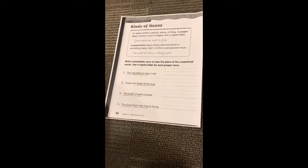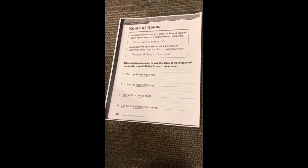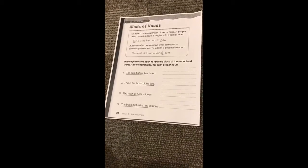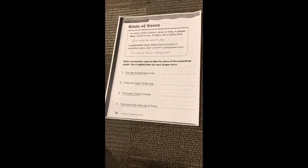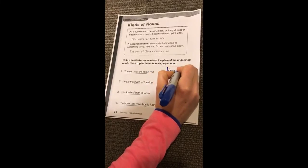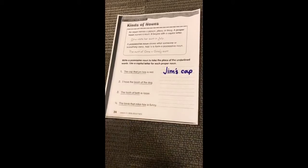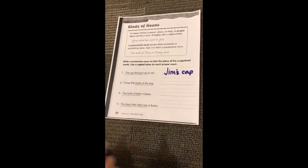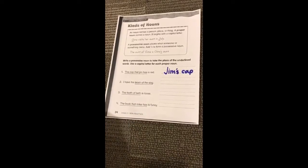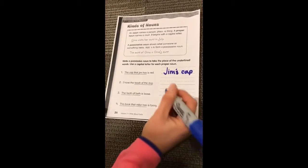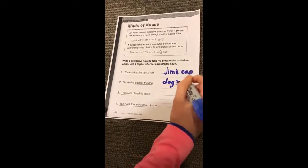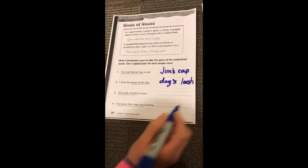Down here it says: write a possessive noun to take the place of the underlined words. Use a capital letter for each proper noun. Number one: the cap that Jim has is red. So we're talking about a person named Jim. I'm going to start with a capital letter when I write Jim. We're talking about something that he owns — he has a cap. So we'll say Jim's cap is red. Jim's cap is red means the same thing as the cap that Jim has is red. And here we have: I have the leash of a dog. We could also say I have the dog's leash. When I write the word dog's, I start with dog and add an apostrophe — dog's leash. I have the dog's leash.